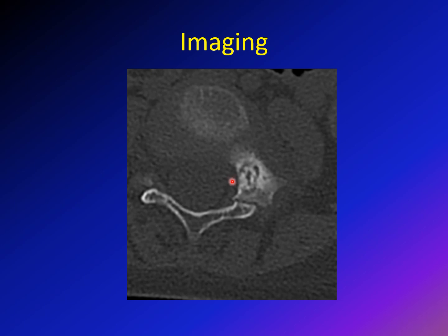This is a CAT scan of osteoid osteoma of the spine. As mentioned, osteoid osteoma can sometimes come in the spine, causing painful sclerosis — so whenever you have a painful sclerosis, think about osteoid osteoma. On the CAT scan, it is located in the posterior element, usually the pedicle, and you can see it surrounded by sclerosis.